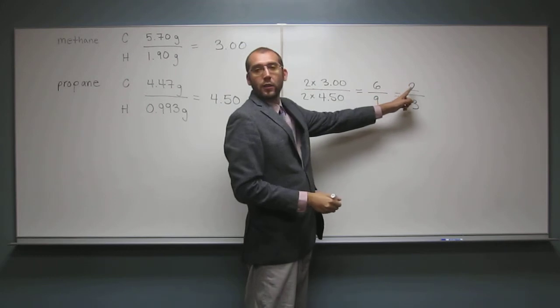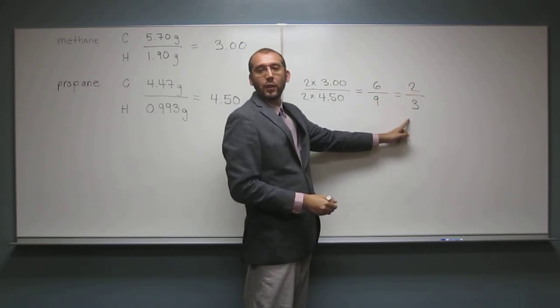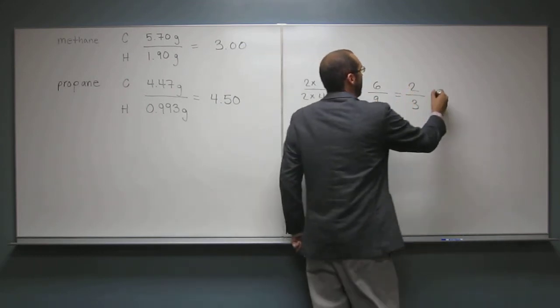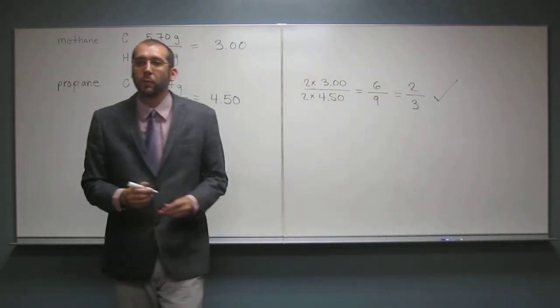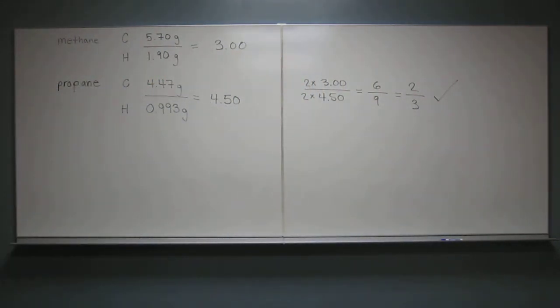So 2 is a simple whole number, and 3 is a simple whole number. So, check, that obeys the law of multiple proportions. Does that make sense? Yeah, it's much easier. It's much easier than what it seems to be, right? Are there any questions? Are there any more questions on this? No, no. Okay, wonderful, wonderful, wonderful.